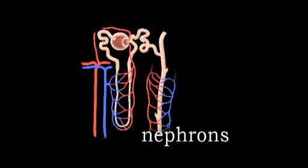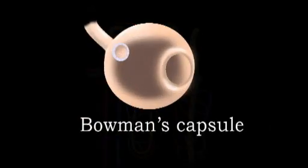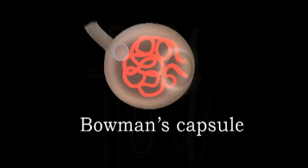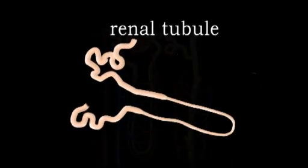Previously mentioned, urine production begins in the nephrons. A nephron consists of a bulb called Bowman's capsule, filled with a cluster of capillaries called the glomerulus, and a long twisting tube called the renal tubule.